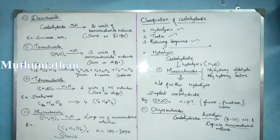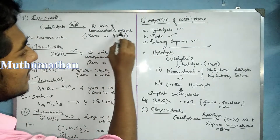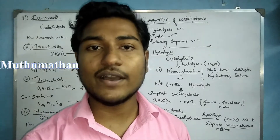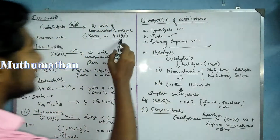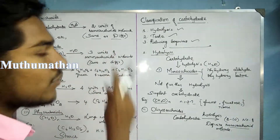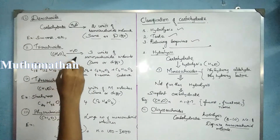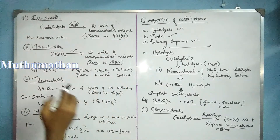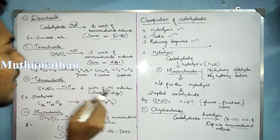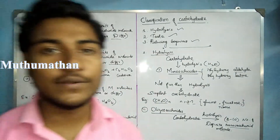Disaccharides yield two units of monosaccharide molecules on hydrolysis. They may have the same molecular formula but different structures. For trisaccharides, we have three units of monosaccharides on hydrolysis. An example is raffinose — on hydrolysis, raffinose gives three units of monosaccharides: one glucose, one fructose, and one galactose.